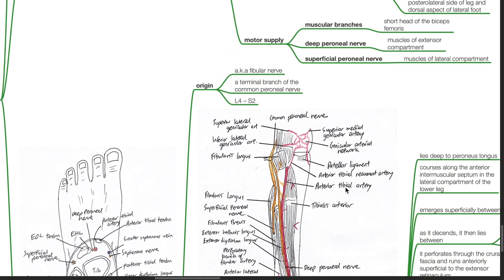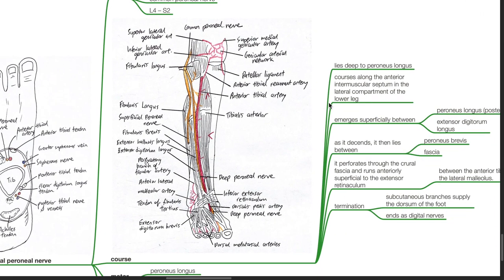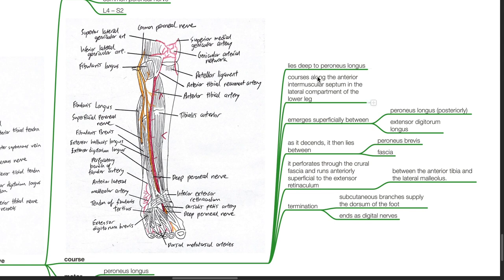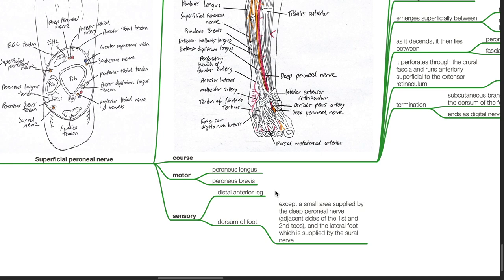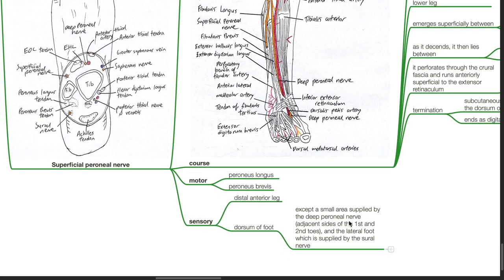Superficial peroneal nerve, also known as the fibular nerve. It is a terminal branch of the common peroneal nerve arising from L4 to S2 nerve fibers. Course: It lies deep to the peroneus longus and courses along the anterior intermuscular septum in the lateral compartment of the lower leg. It emerges superficially between the peroneus longus posteriorly and extensor digitorum longus. As it descends, it lies between the peroneus brevis and the fascia, then perforates through the crural fascia and runs anteriorly superficial to the extensor retinaculum between the anterior tibia and the lateral malleolus. Termination: subcutaneous branches supply the dorsum of the foot and end as digital nerves. Motor supply: peroneus longus and peroneus brevis. Sensory supply: distal anterior leg and dorsum of the foot, except the adjacent sides of the first and second toes (deep peroneal nerve) and the lateral foot (sural nerve).